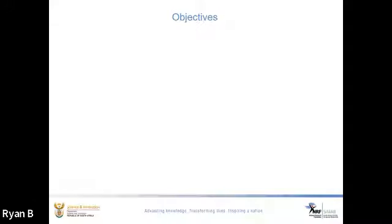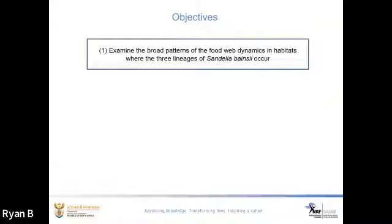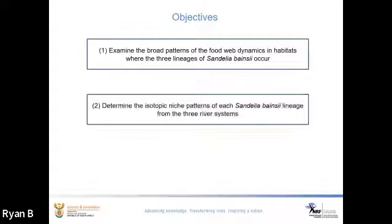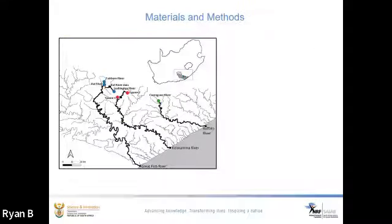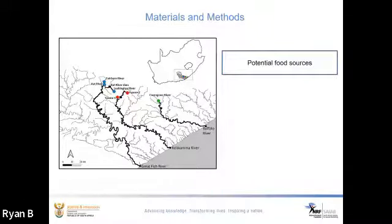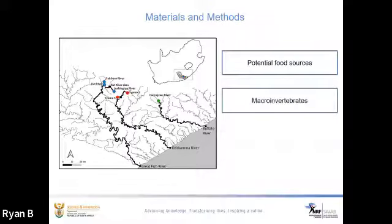The objectives of the study were to examine broad patterns of the food web dynamics and habitats where the three Sandelia benzae lineages occur, determine the isotopic niche patterns of each lineage from the three river systems, and evaluate the interspecific interactions of the Sandelia benzae lineages with other co-occurring species. Sampling was conducted in headwater streams of the Great Fish River, Kiskama River, and Buffalo River. To examine food web patterns and trophic niche relationships, potential basal food sources, macroinvertebrates, and fish were collected.